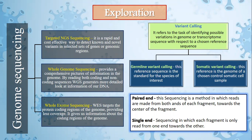Moving on to variant calling: variant calling refers to the task of identifying possible variations in the genome or transcriptome sequence with respect to a chosen reference sequence. There are two types. First is germline variant calling, in which the variations are present from birth and are not usually taken as reference sequences. Second is somatic variant calling, where variations occur over time and are normally taken as control somatic cell samples.